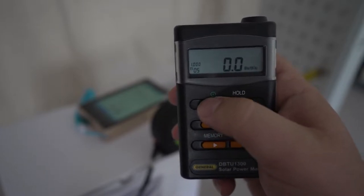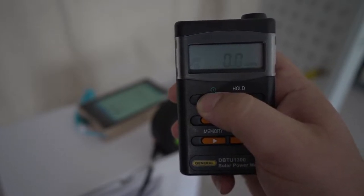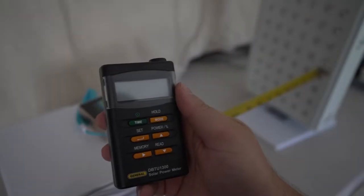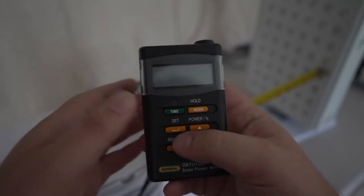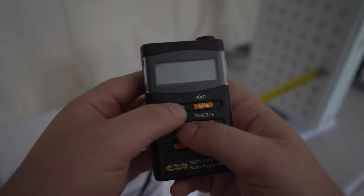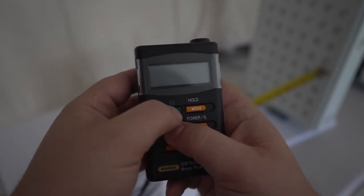The first thing you do is actually make sure your device is off. So to change the calibration, while we're turning it on, we're going to hold this set button, and then we're going to turn it on at the same time.